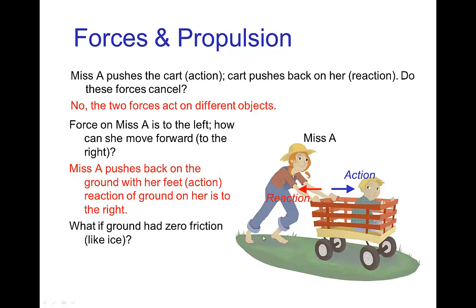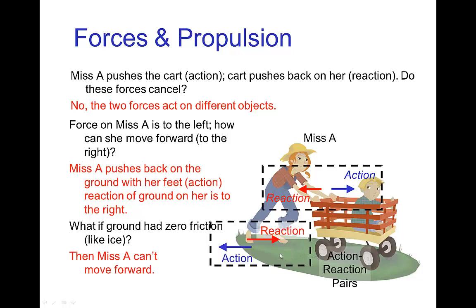The key is that there's a force of friction from the ground. If there were no friction, she wouldn't be able to move forward. She pushes back on the ground; the ground pushes her toward the right. As long as that force is larger than the reaction force of the cart pushing her backwards, she'll be able to move forward. In other words, she needs to exert enough force on the ground in order to move forward.